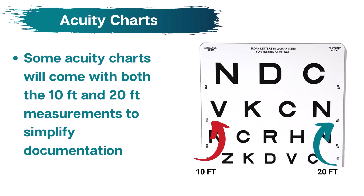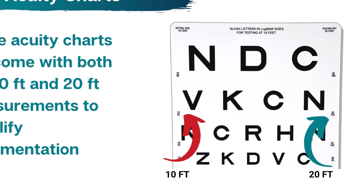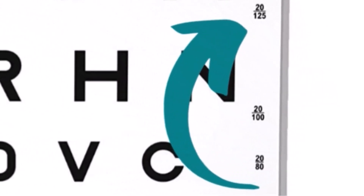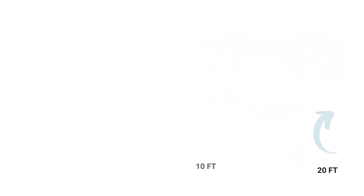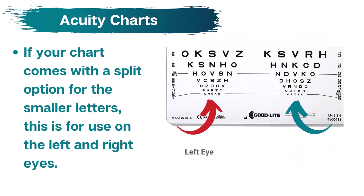On one side of the chart, you will see the screening distance — the number will appear as 10 over some number. On the right side of the chart, you will see a number that is 20 over another number; this is the value that will be reported. Below the large letters, you may have a chart broken up into two smaller sets of letters: the letters on the right are for screening the right eye, and the letters on the left are for screening the left eye.